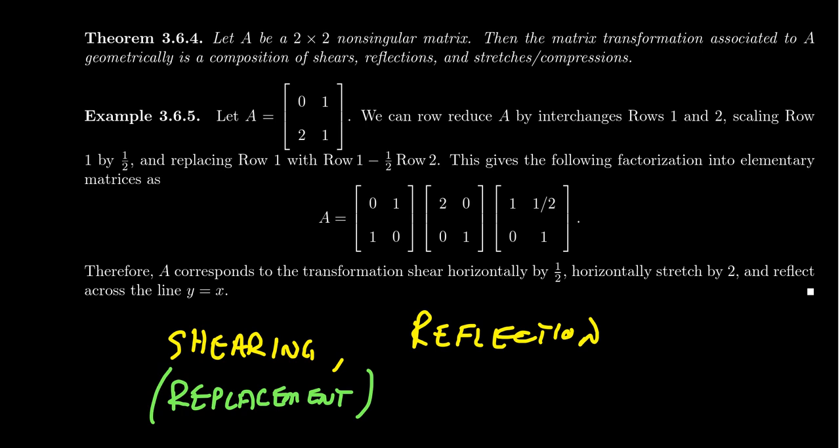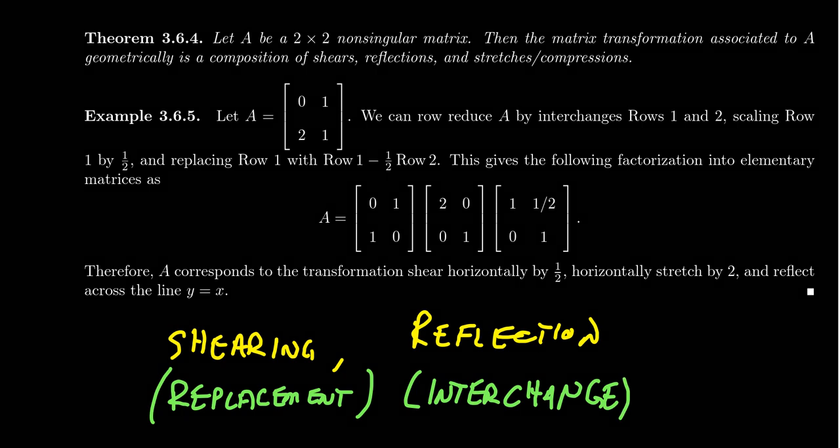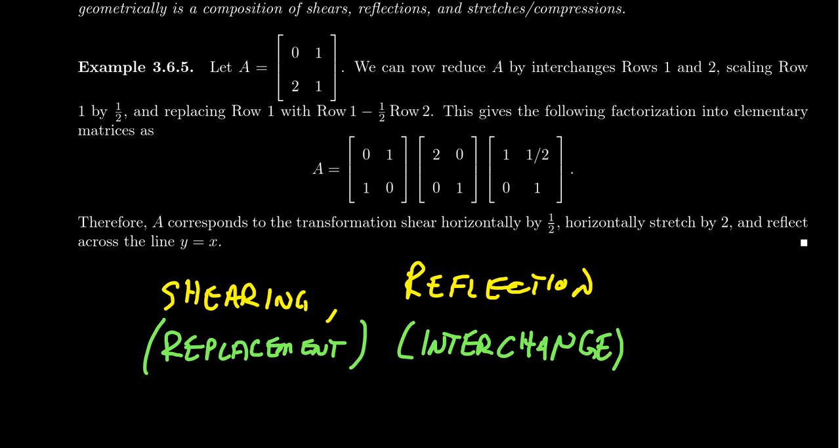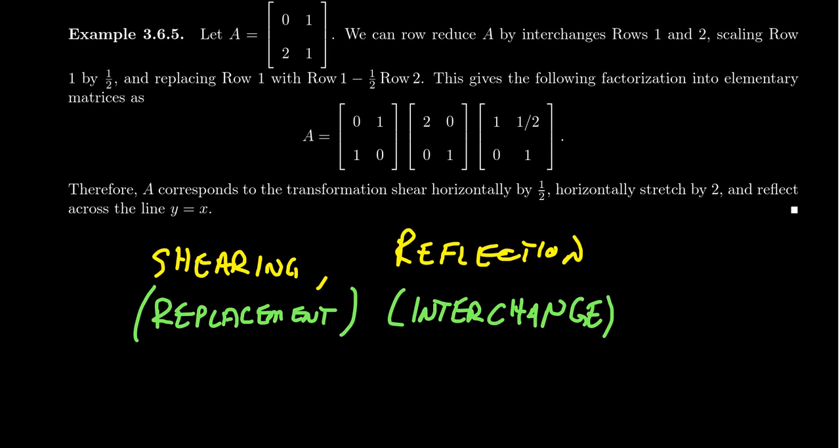that corresponded to the only interchange elementary matrix applicable for 2x2 matrices. But also, reflections could correspond to multiplying by negative diagonal matrices, which would be an example of an elementary matrix of scaling type.